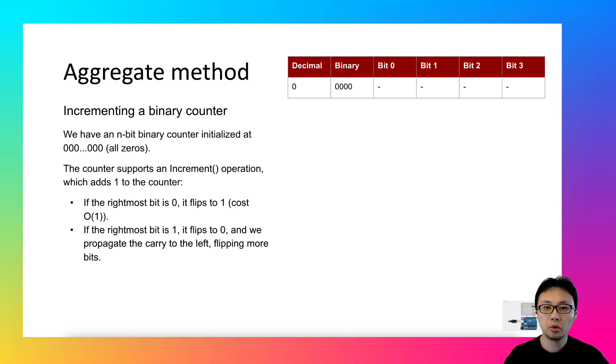When the increment operation adds 1 to the rightmost bit, it will become 1. That will lead to the second row. Now, in the second row, the rightmost bit is 1. If you continue to run the increment operation,